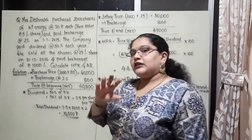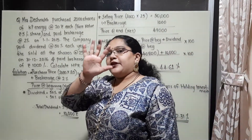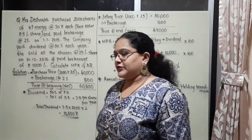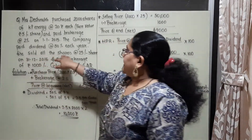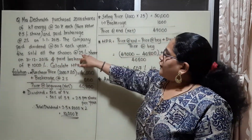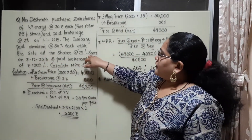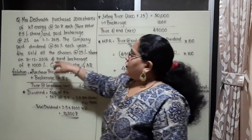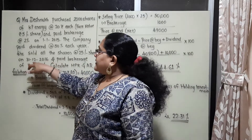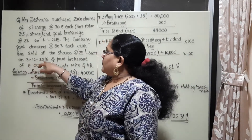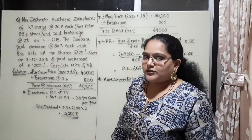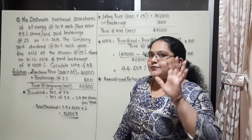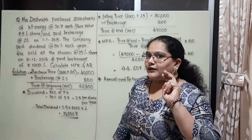Every year the company is paying a dividend of 50%. Now she sold all the shares at a rate of 25 rupees per share on 31st December 2016. How many years did she hold her investment?